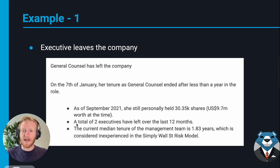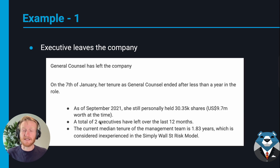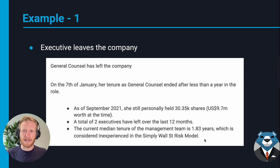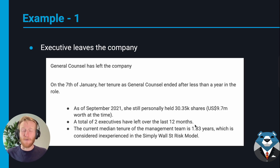A total of two executives have left over the last 12 months — not too many, but I'd want to find out how big the management team is to see if two is a large percentage. The current median tenure of the management team is 1.83 years, which is considered inexperienced in the Simply Wall Street risk model. It seems like the management team doesn't stay there for too long, so there might be a high rate of staff turnover — that's a concern.